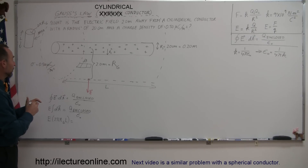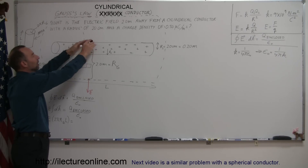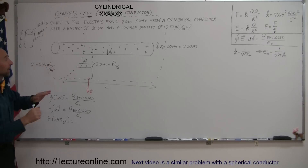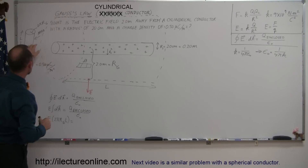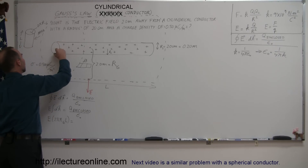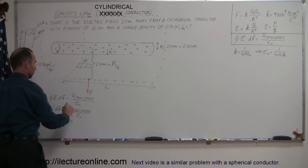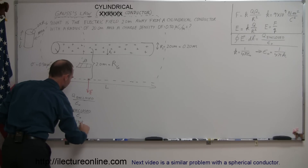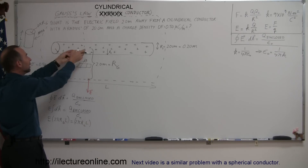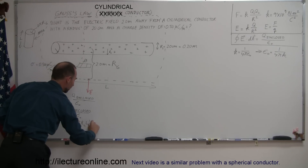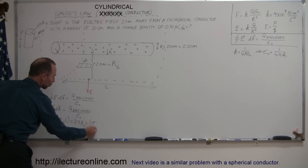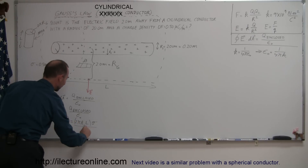The charge enclosed depends on the charge density on the inner cylinder. The charge density is 0.5 microcoulombs per square meter, and we multiply that times the surface area of the inner cylinder, which is 2 pi R sub C times L. So Q enclosed equals sigma times 2 pi R sub C times L. That gives us the total charge enclosed within the Gaussian cylinder, divided by epsilon sub-naught.